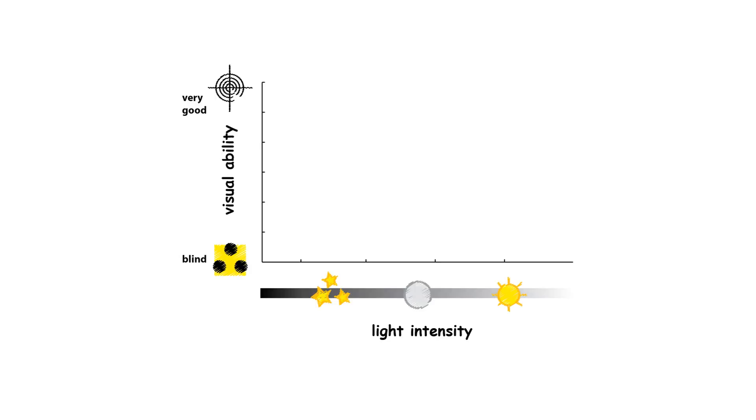This is a model of the spatial acuity of a moth assuming no adaptations for nocturnal vision, which is what your calculations assumed. And indeed, vision does break down at night.